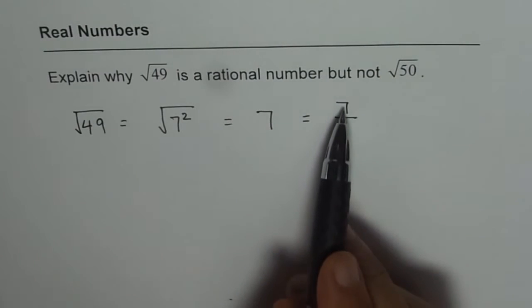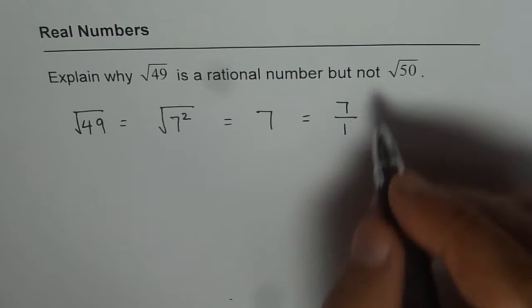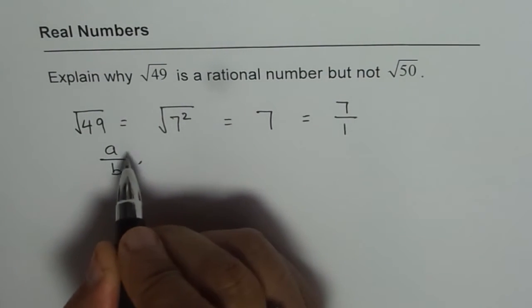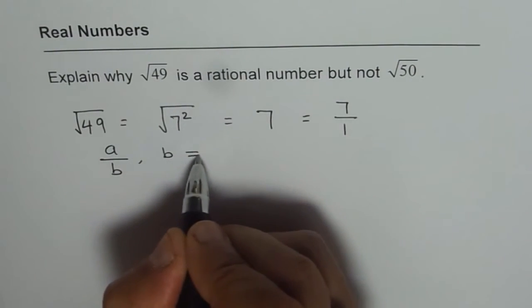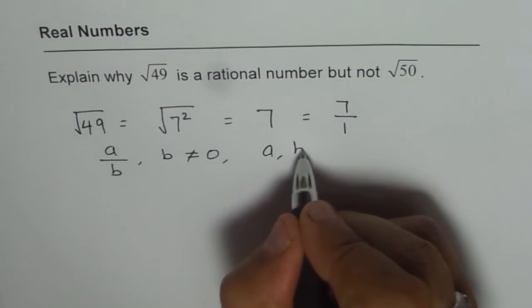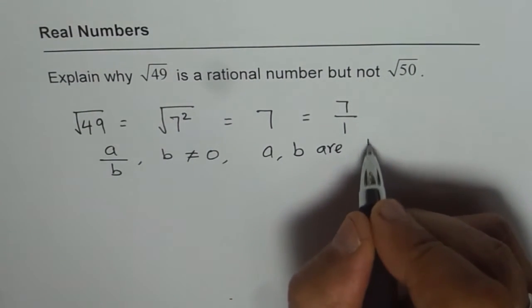49 can be written as a over b in general, where a and b are integers and b is not equal to 0, and a and b are integers.